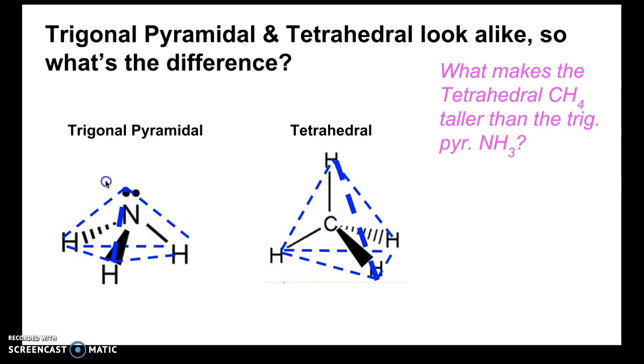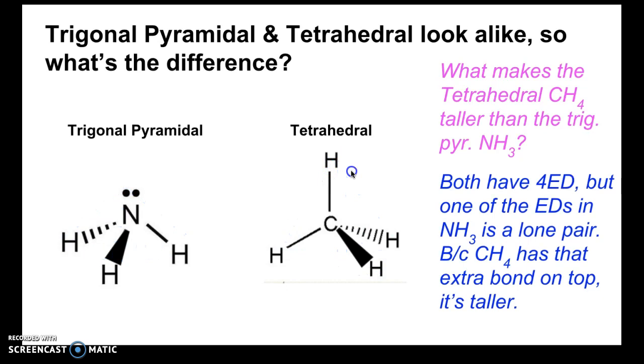Whereas with NH3 there's no bond there. The top bond is replaced by a lone pair and so that's what makes it shorter because the top of this pyramid is where the central atom or nitrogen is. Here the top of this tetrahedral structure is where that terminal hydrogen is. So that's what makes it taller. So if you'll notice in both cases they both have four electron domains but in NH3 one of the electron domains is a lone pair and in CH4 that extra bond on top just makes it taller.